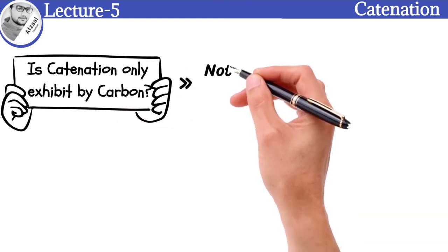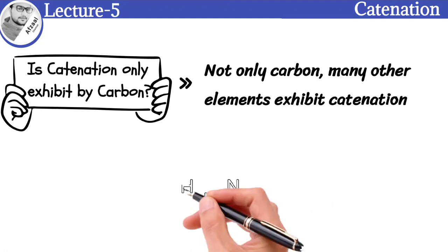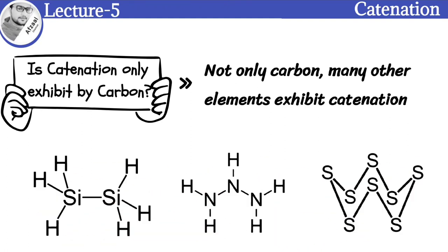Not only carbon, many other elements also exhibit the property of catenation, like nitrogen, silicon, and sulfur. But the catenation shown by these elements is much weaker than carbon.